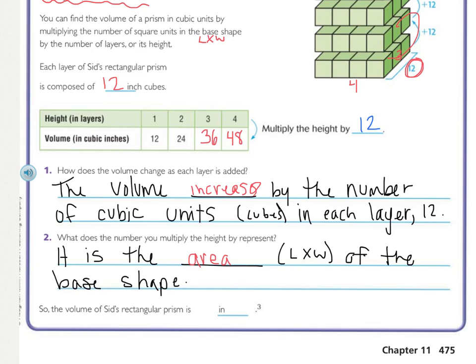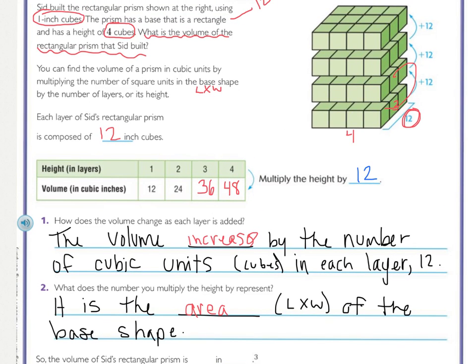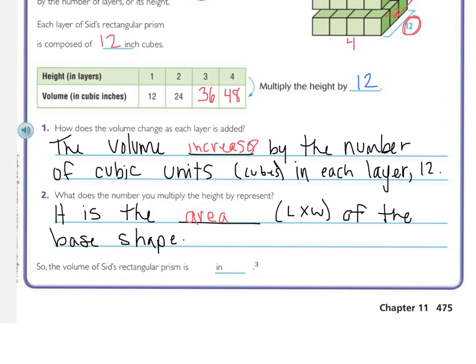So now let's just answer the question. What is the volume of his prism in cubed inches? We have a length times width of 4 and 3, so that's 12, and 4 layers. So 4 times 3 times 12, that means that the area of his rectangular prism is 48 inches cubed.